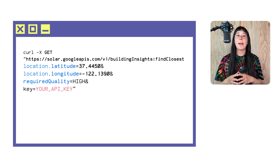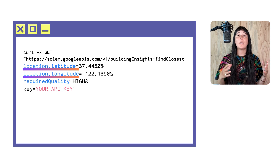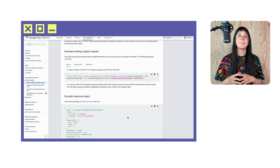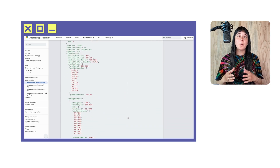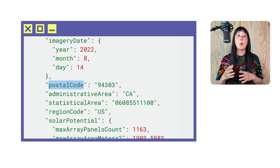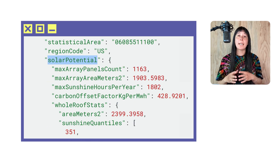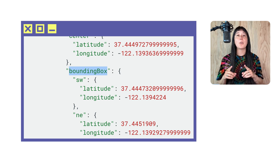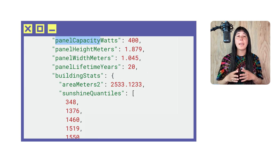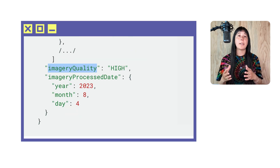Include your request URL parameters that specify the latitude and longitude coordinates of the location and the minimum required quality level allowed in the results. That request produces a JSON response where we can get information like the imagery date, postal code, solar potential data, roof data, the actual bounding box around the lat-long location, financial return on investment for a US location, panel capacity, area in meters, and imagery quality, for example.